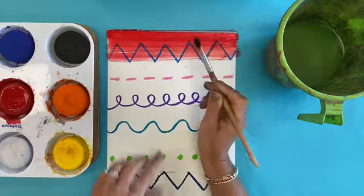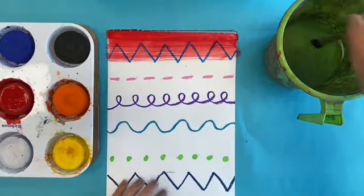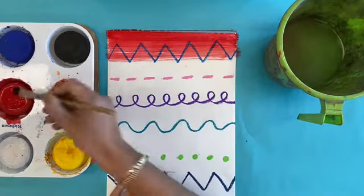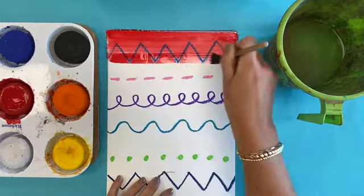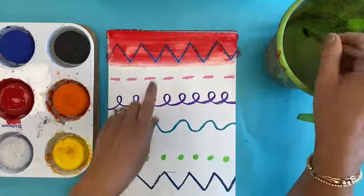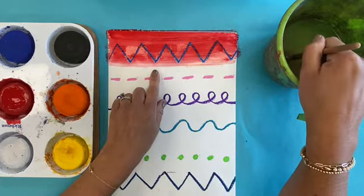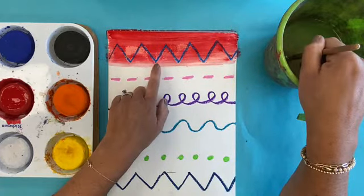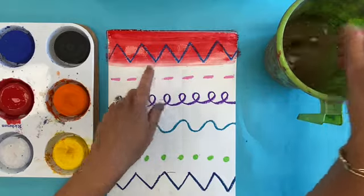Grab some more paint and continue. Good! So we painted over our first line. Isn't it awesome that you can still see your crayon or oil pastel line through here? It's like magic how it comes through. The next color of the rainbow is orange.